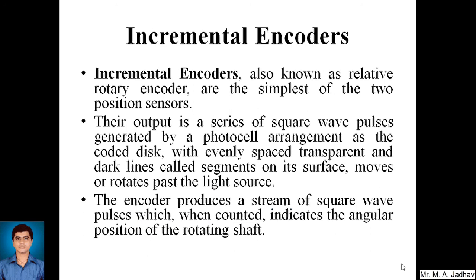The output is a series of square wave pulses generated by a photocell arrangement as the coded disk with evenly spaced transparent and dark lines called segments on its surface moves or rotates past the light source. The encoder produces a stream of square wave pulses which when counted indicates the angular position of the rotating shaft.